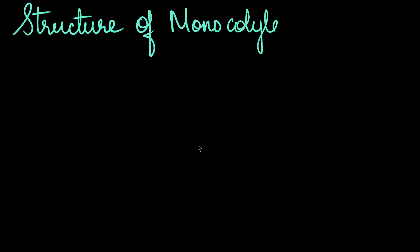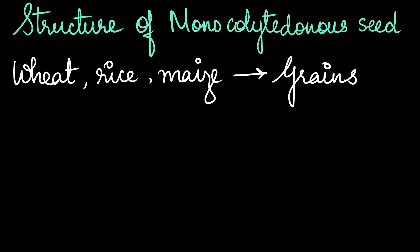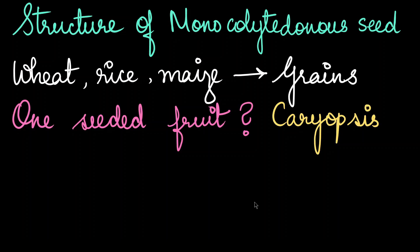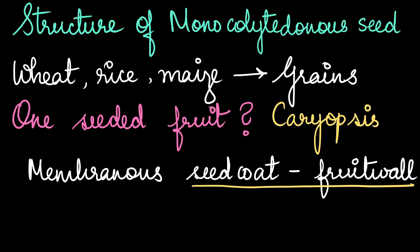Moving on to the structure of a monocot seed. Examples of monocot seeds are wheat, rice, and maize — basically all our grains. These are also called one-seeded fruits, and they have a technical term called caryopsis. One interesting thing about the caryopsis fruit is that the seed coat is not separate from the fruit wall — the seed coat and the fruit wall are fused. Also the seed coat is not thin; it's quite thick, chewy, and membranous.